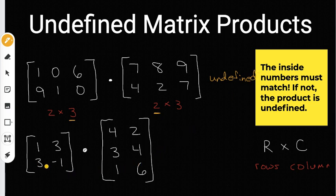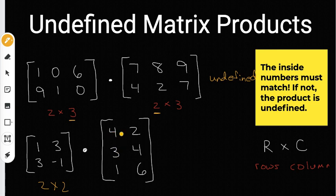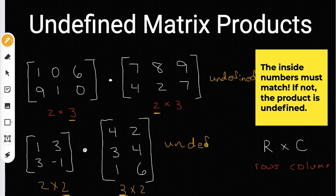Looking down here, we're going to try this one next. How many rows does this have and how many columns does it have? The first matrix is a two by two — that means it has two rows and two columns. Over here, this matrix is a three by two, meaning it has three rows but only two columns. So the inside numbers are going to be two and three, and since they don't match up, this product is going to be undefined.